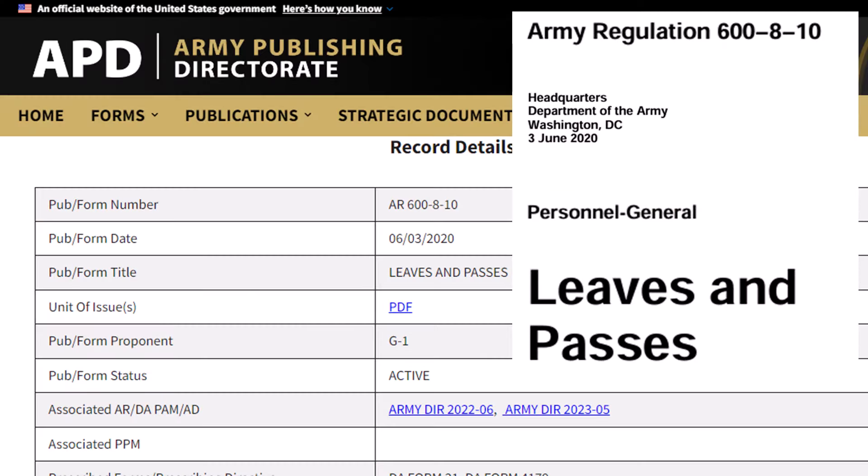This is going to be really important later when we look at the 2024 retirement guide and we notice that there are some things that don't match. The other reason that looking at the official website is important is because of those two army directives. Army directives change army regulations, and when you've got a regulation as old as this one, it's a good idea to check to see if any of the things you care about have been changed by these directives. In this case, those army directives are about pregnancy, parenthood, reproductive health - not really anything we care about as far as retirement.